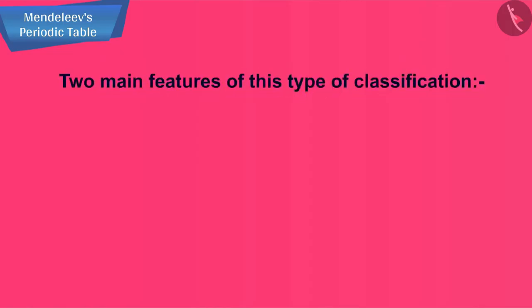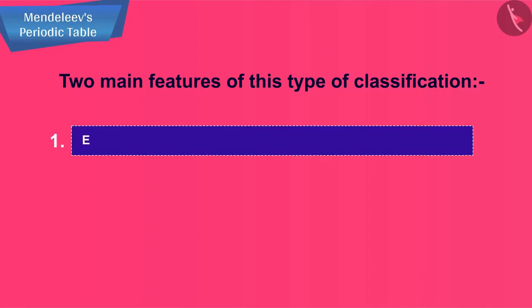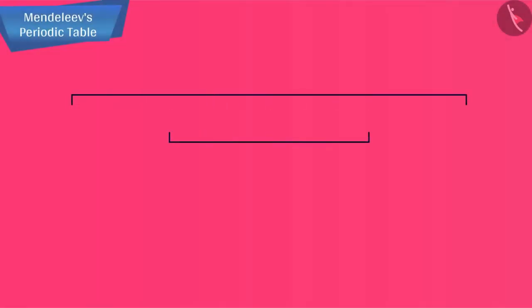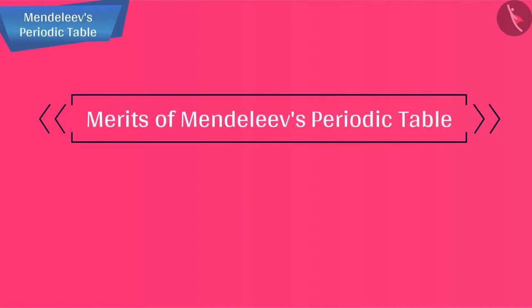We will now describe two main features of this type of classification. One: elements are arranged in increasing order of their atomic masses. Two: groups of elements have similar properties. We will now discuss the merits of Mendeleev's periodic table.